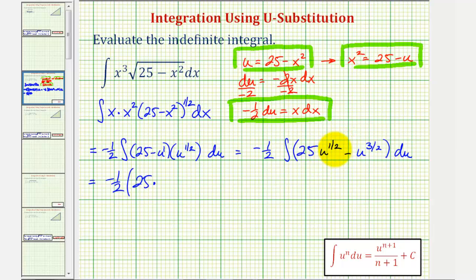But instead of dividing by three-halves, let's multiply by two-thirds. So we'd have u to the three-halves and then times two-thirds. Minus the antiderivative of u to the three-halves would be u to the five-halves divided by five-halves or two-fifths times u to the five-halves.